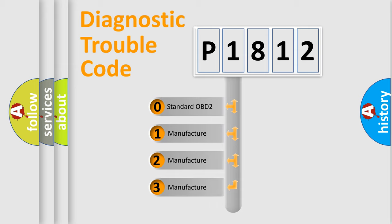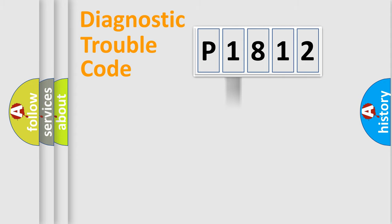If the second character is expressed as zero, it is a standardized error. In the case of numbers 1, 2, or 3, it is a more precise expression of the car-specific error.